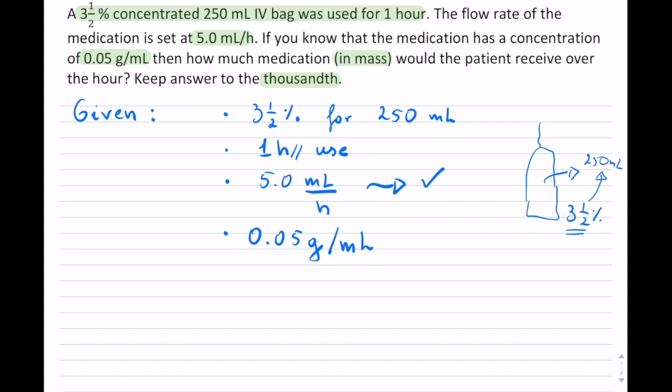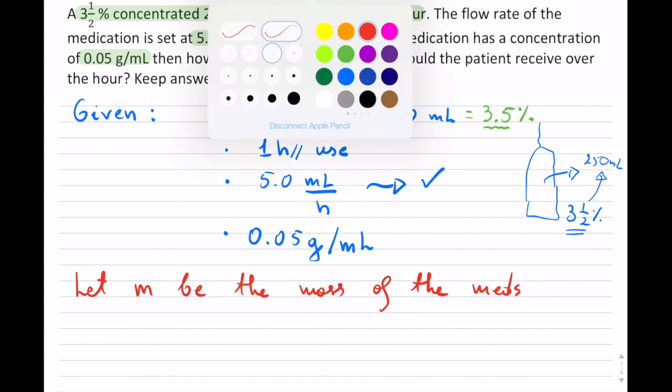By the way, I can change this to 3.5% because it's a fraction, so I can keep it as a decimal if I like. And now, let me define. So this is let m be the mass of the meds that are given to this patient over that 1 hour.